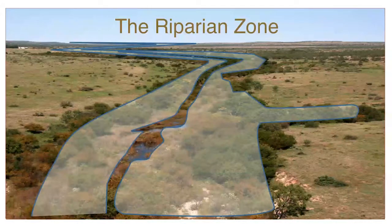This includes the stream bank, flood plain, plants, soils, and rocks that make up the ribbon of land that follows and interacts with the waterway. Areas adjoining lakes, reservoirs, and wetlands are also considered riparian areas, but this short course will focus mainly on rivers and streams.